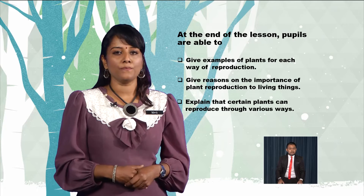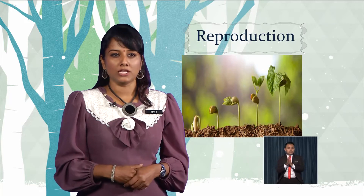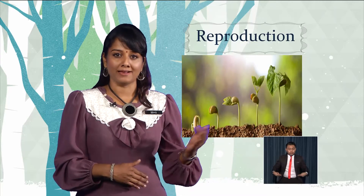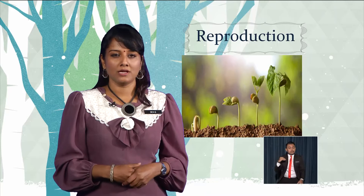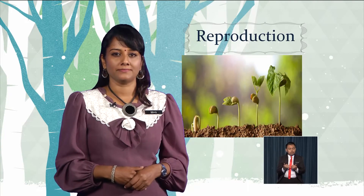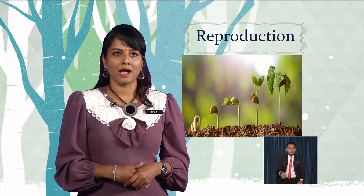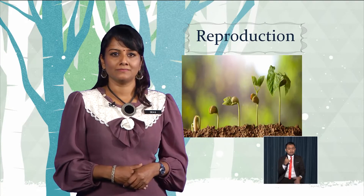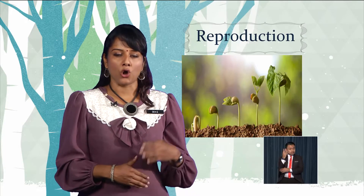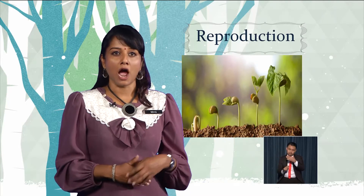What is reproduction? Reproduction occurs in all living things such as humans, animals, and plants. Let's take a look at how reproduction occurs in plants. Boys and girls, why do plants reproduce? Good — plants reproduce to avoid extinction.